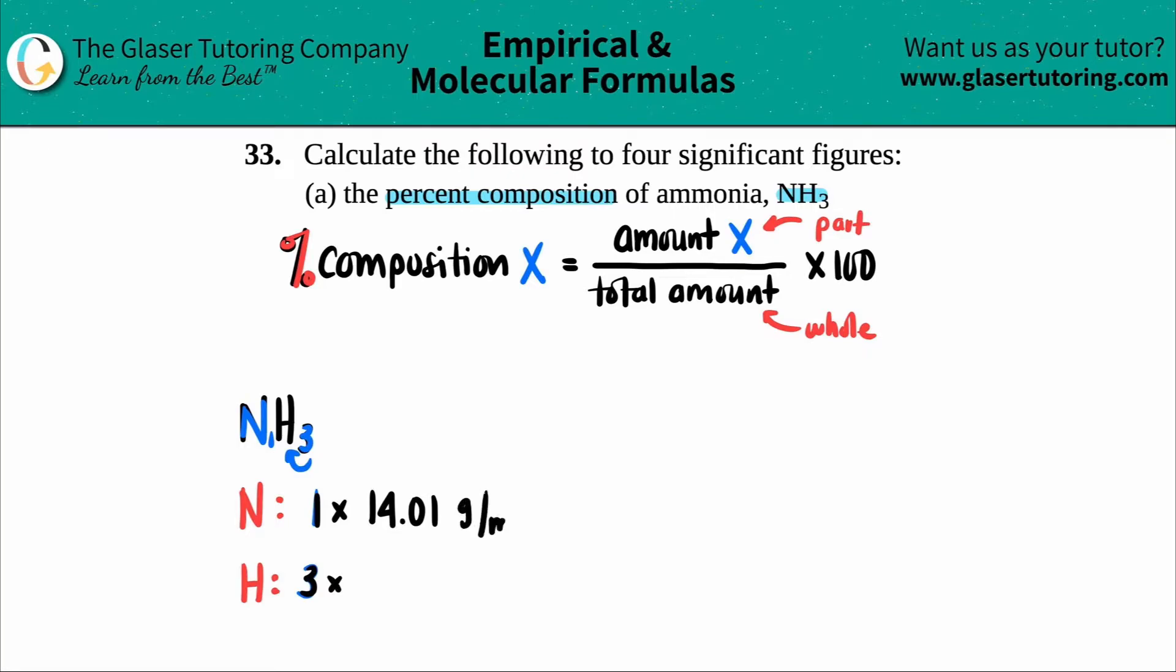And this is grams per mole. That's the unit of any molar mass on the periodic table. And then for my hydrogen, I have 1.008 and that's grams per mole.